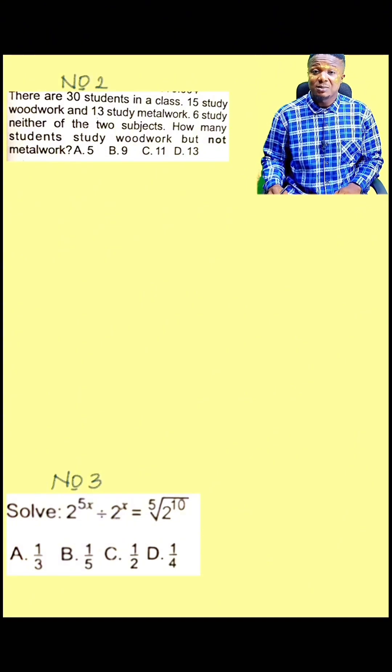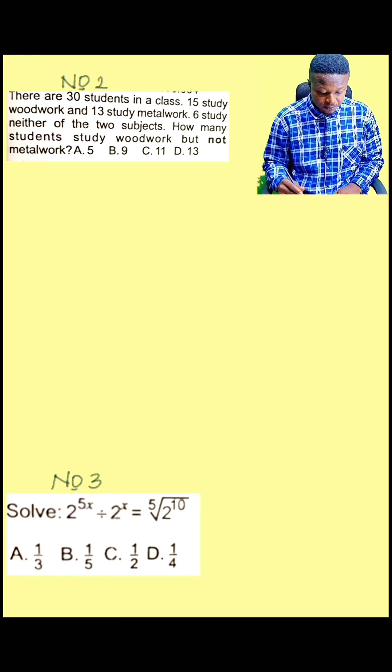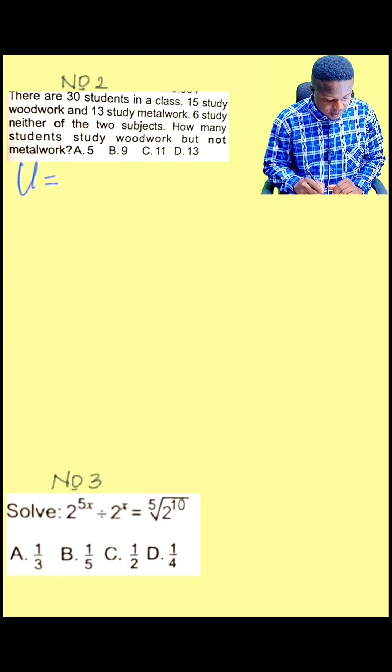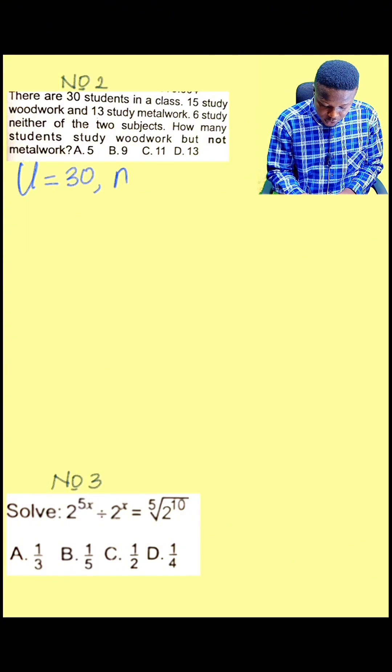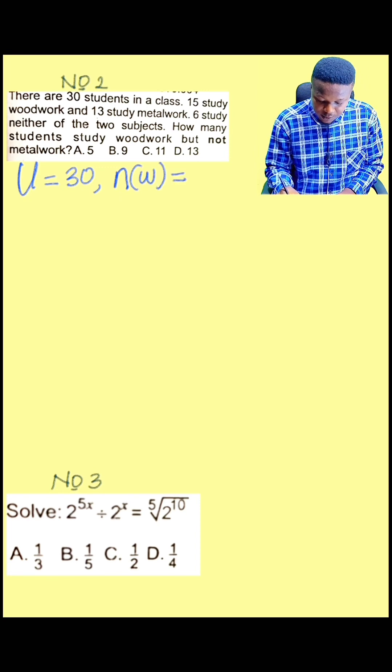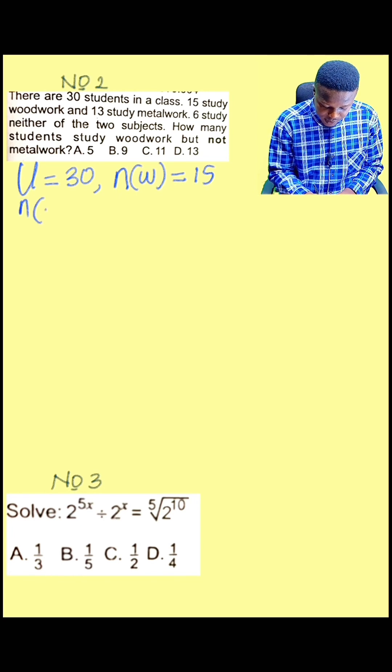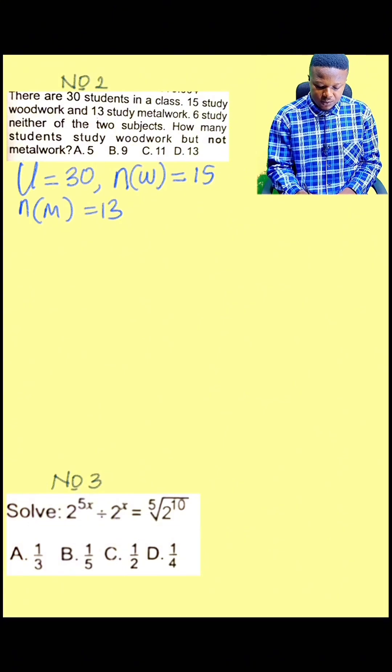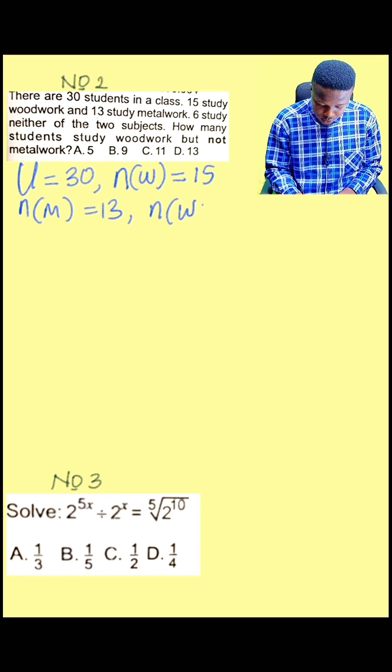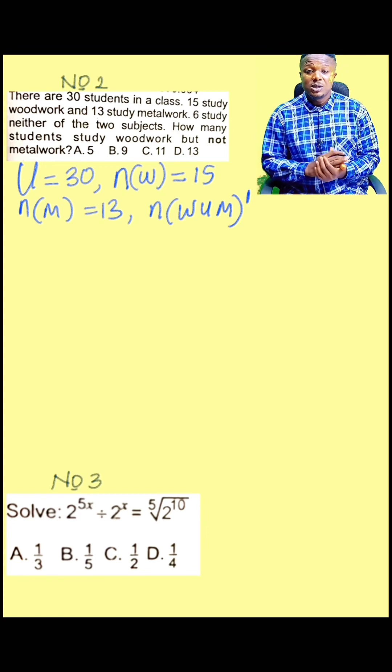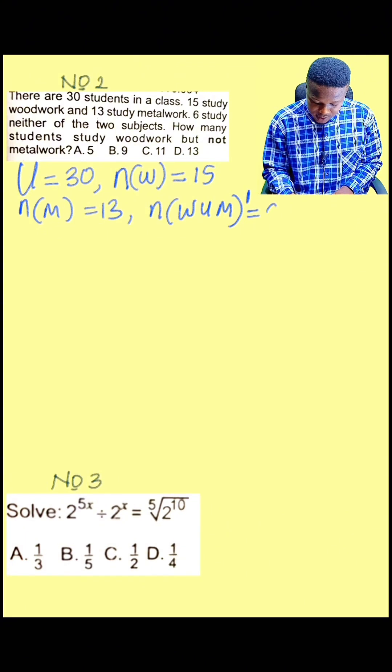Woodwork but not metal work is the same thing as saying woodwork only. Now, to know the number of students that study woodwork only, let us write out all the information presented by the question. We know that the universal set is 30, total number of students. Let us use W to represent woodwork, meaning that number of woodwork is 15. Number of metal work, M, is 13. Six students do not offer any of the subjects. So you can call it number of woodwork union metal work complement because these students do not belong to either woodwork or metal work, so they equal 6.